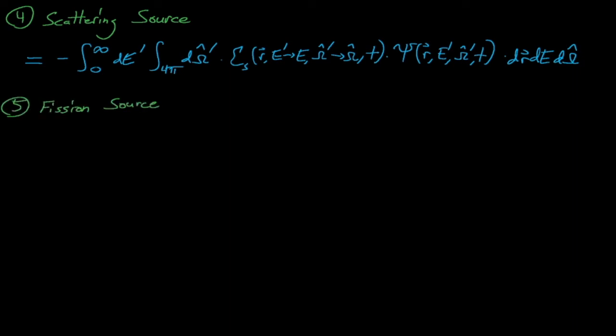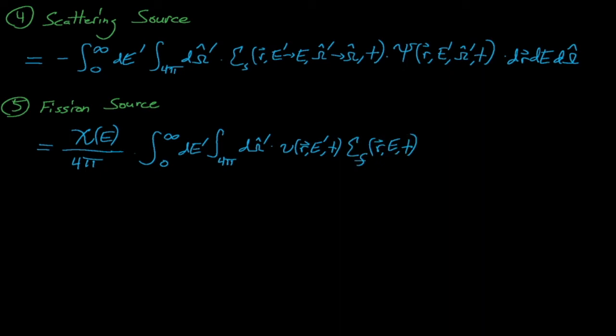The fission source describes the source of neutrons emitted from fission reactions in the system. The innermost terms of this integral, which integrate over another E' and Ω', are used to determine the number of fission reactions and then the number of fission neutrons emitted in our dr region.